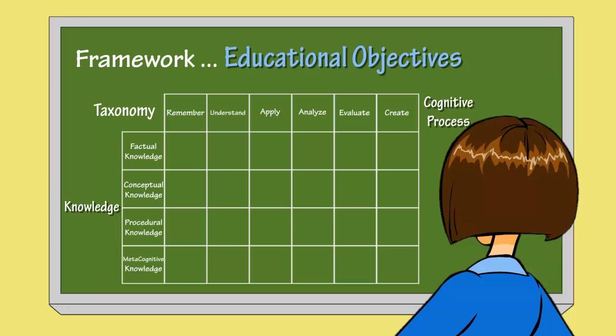Here we can see how they organized these categories in the table. If we look closely at this table, we can see that the table moves from concrete to more abstract as we look from left to right and top to bottom. Items falling in the bottom right of the table then would be considered the most abstract.